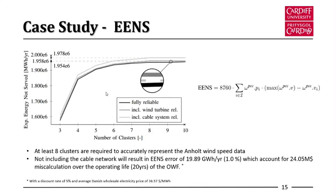In reliability assessment, Expected Energy Not Served is used as a criterion to evaluate reliability. This shows the variation of Expected Energy Not Served with different numbers of clusters. The calculated energy not served for eight clusters shows an error of 19.89 gigawatt-hours per year when the cable is not included, which accounts for a miscalculation of about 24 million US dollars of energy not served — which is significant.